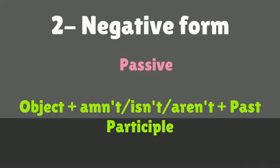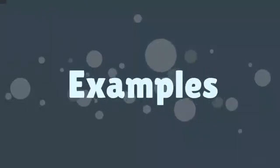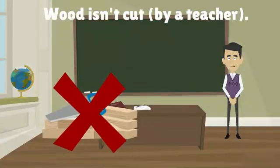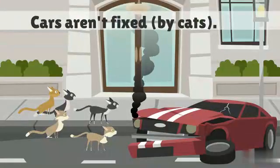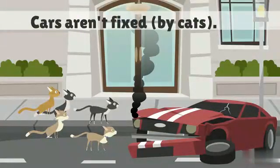Negative Passive: Object plus is not or are not plus past participle. Examples: Wood isn't cut by a teacher. Cars aren't fixed by cats.